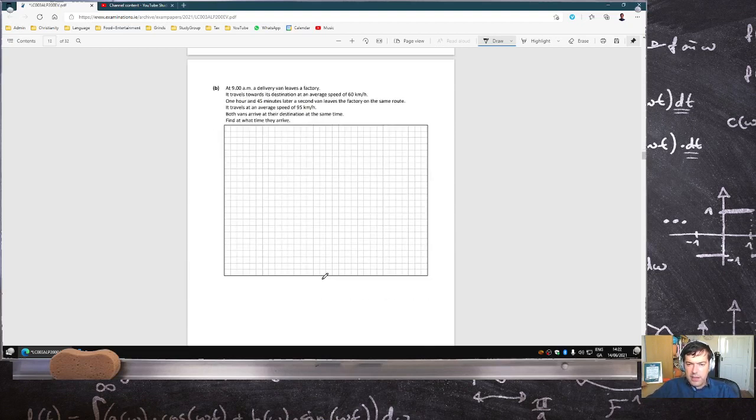At 9am, a delivery van leaves a factory. It travels towards a destination at a speed of 60. One hour and 45 minutes later, a second van leaves the factory on the same route. It travels at a speed of 95. Both vans arrive at the destination at the same time. Find at what time they arrive.